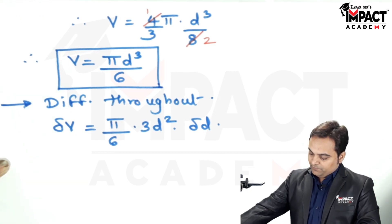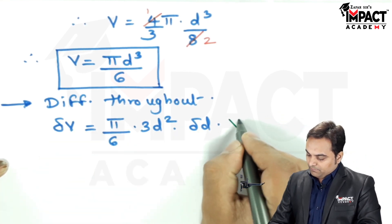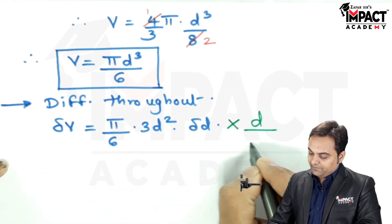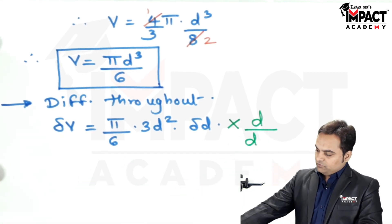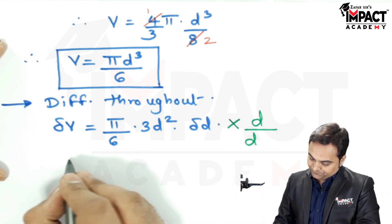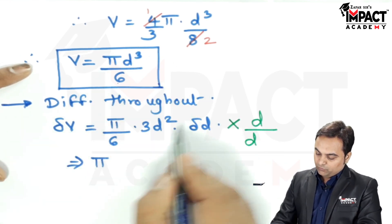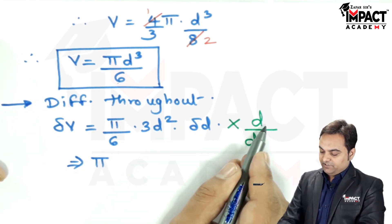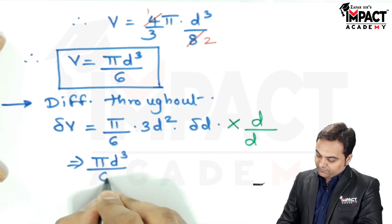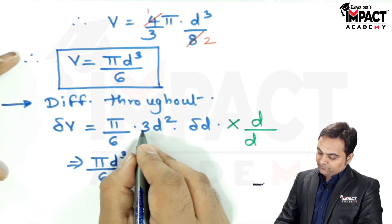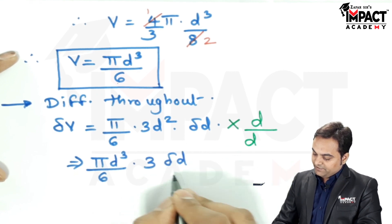Next step would be, I am going to multiply, that is after differentiating, multiplying and dividing by D, so that we get it in a proper way, proper form. So, that would be, I want it in the form of volume. So, volume is Pi by 6 D cube. Here we have D square. When I multiply with this D, it becomes D cube. So, Pi D cube by 6. Here we have 3, delta D by D, which is left.